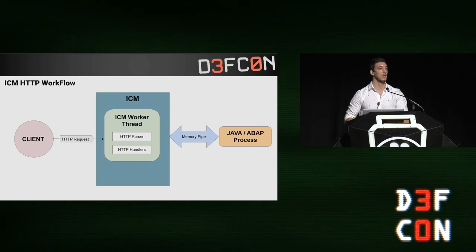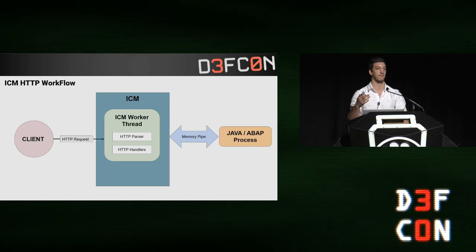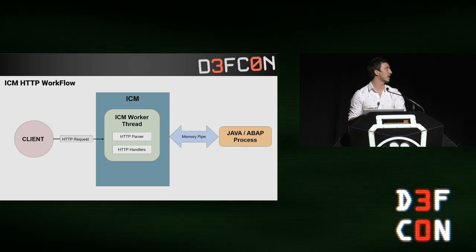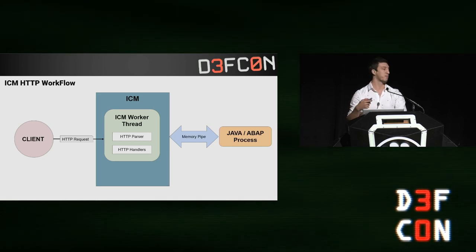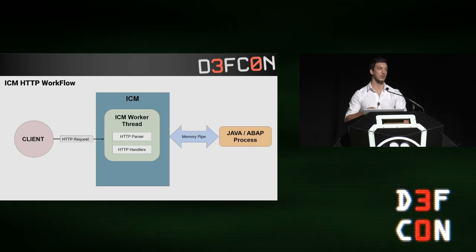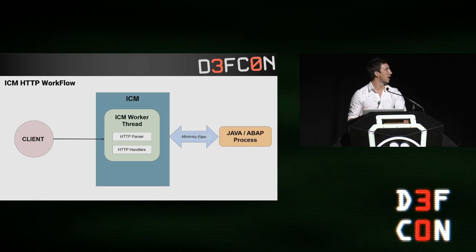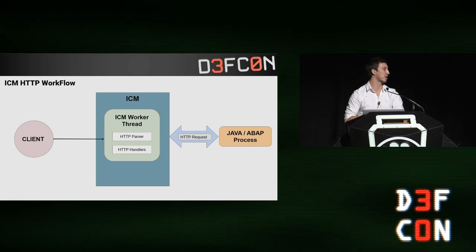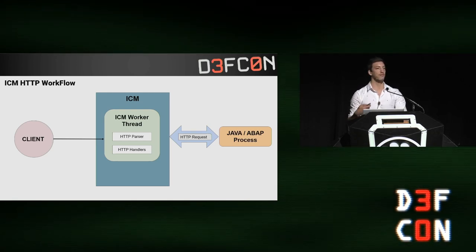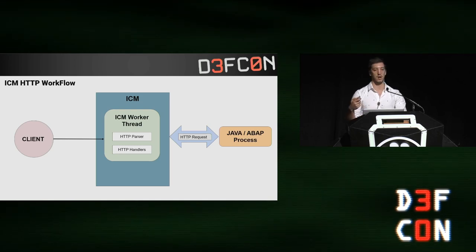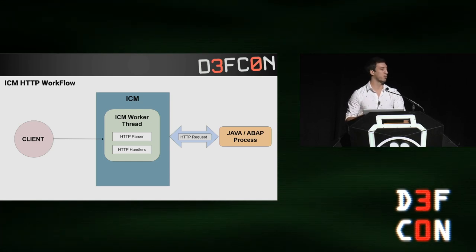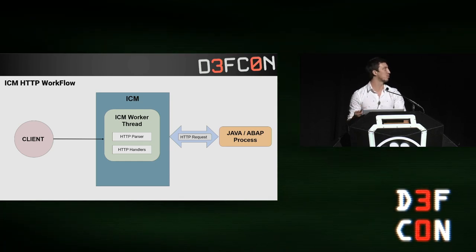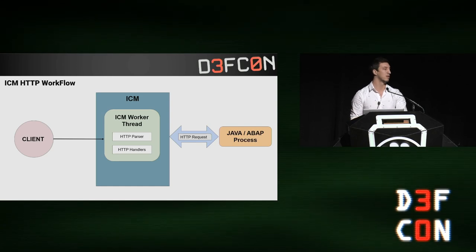If the request cannot be resolved internally — which will be the case most of the time — it will be sent to another process. This is because the business logic of SAP is not inside the ICM; it's actually programmed in Java or ABAP. To do so, it uses something called memory pipes to efficiently send data to the other process, called the worker process, which will generate a response, send it back through the memory pipes to the ICM, and the ICM will forward it to the client.